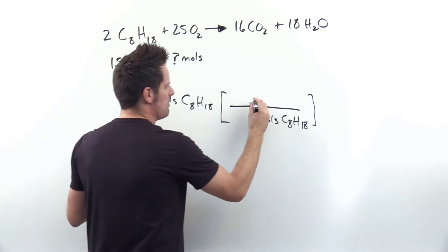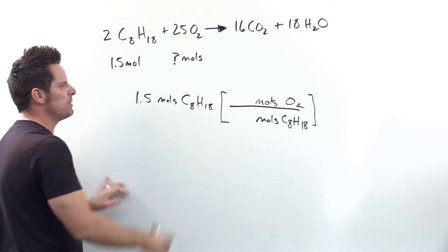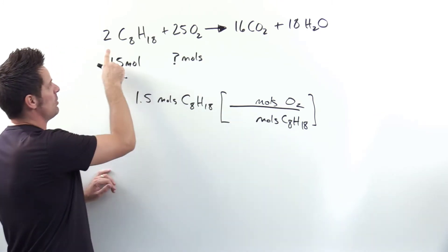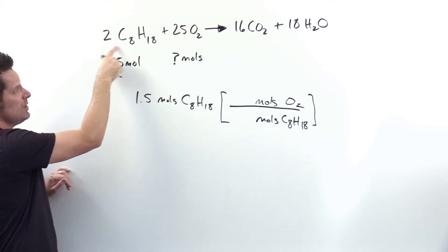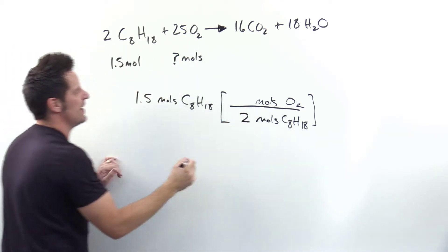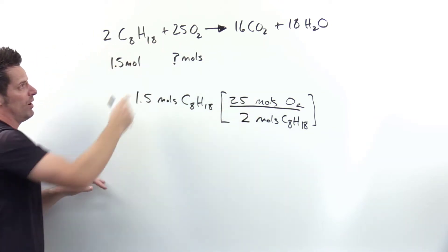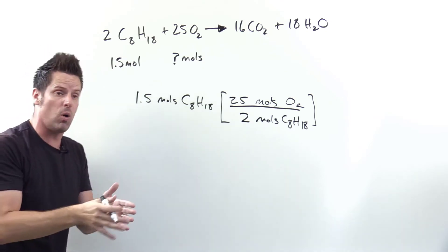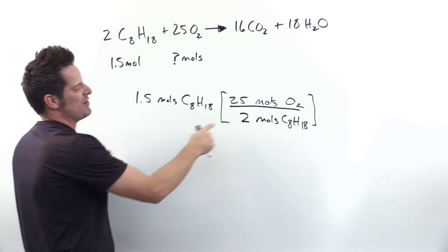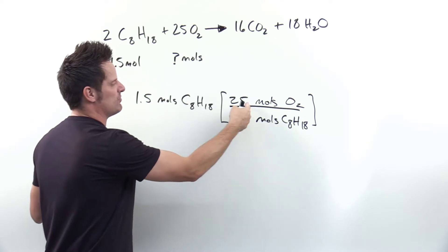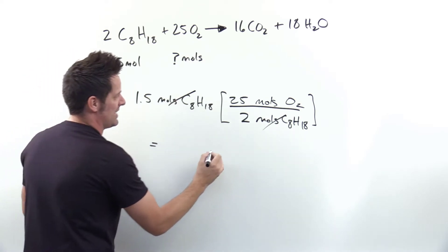Moles is the intermediary between grams of one substance and grams of another. So I can put moles of O2 in the numerator. The numbers I put in there are the balanced coefficients from the equation. I have a 2 next to octane, so I put 2 in the denominator; I have a 25 next to O2, so I put 25 in the numerator. These numbers are the mole ratios — for every 2 moles of octane you burn, you need 25 moles of O2.